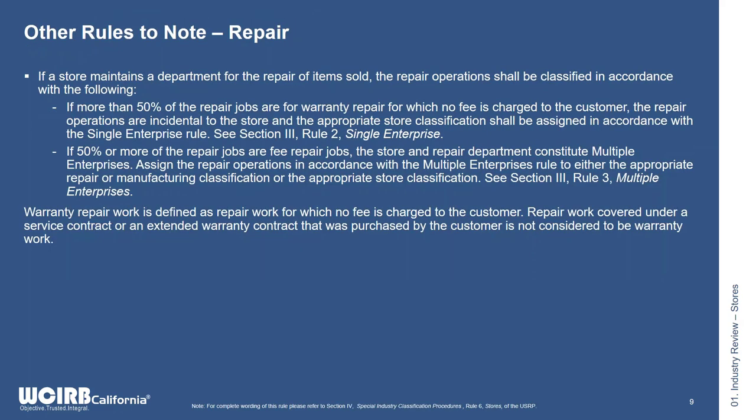There are additional rules within the procedures regarding repair operations. Rule D states that if a store maintains a department for the repair of items sold, and more than 50% of the repair jobs are warranty repairs with no fee to the customer, then this is a single enterprise — you would not separately classify the repair operations. If 50% or more of the repair jobs are fee-based, the store and repair department constitute multiple enterprises, and you should assign repair operations to the appropriate repair or manufacturing classification using the multiple enterprises rule.